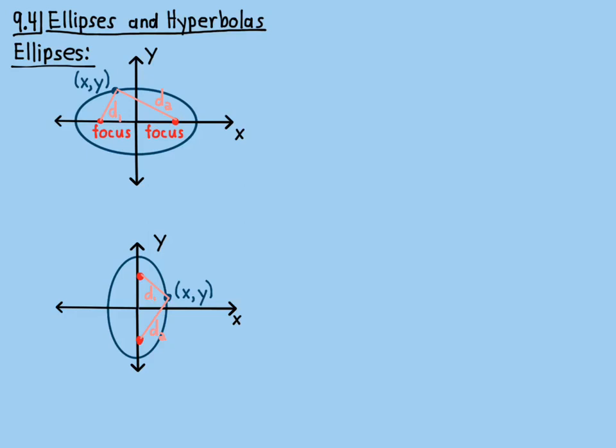And if you change the constant, you get a different ellipse. So d1 plus d2 is a constant. And you see I marked those in there for the vertical one. It's the same, of course.